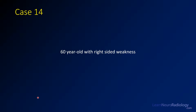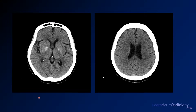For case 14, we have a 60-year-old with right-sided weakness, so we're moving on to images of the brain again. Here you see two images from a non-contrast CT. Take a quick look at those — that's usually the first study that a patient suspected of stroke is going to get.